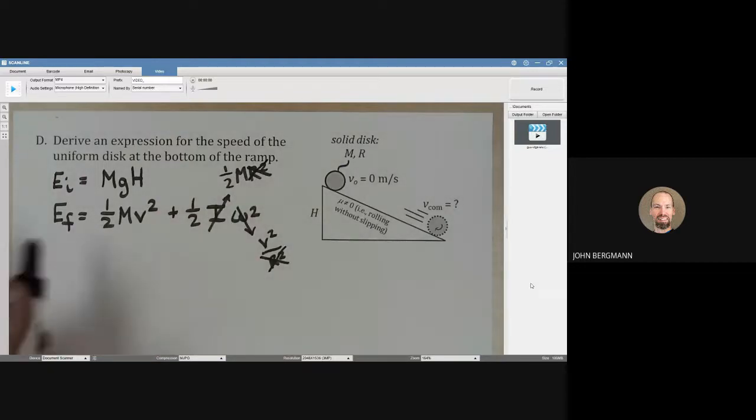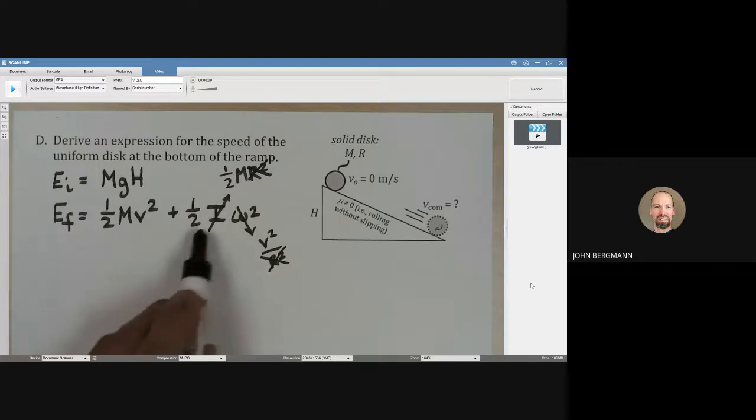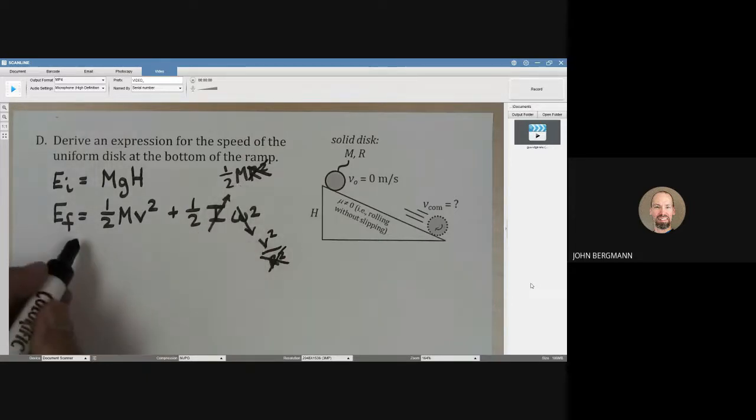Which leaves us with what? I'm seeing one-half mv squared. And what's this going to be? One-fourth mv squared. So won't that be a total of three-fourths mv squared?